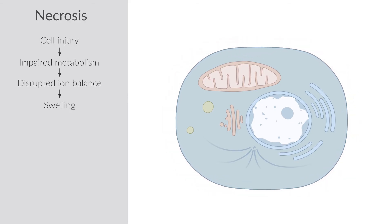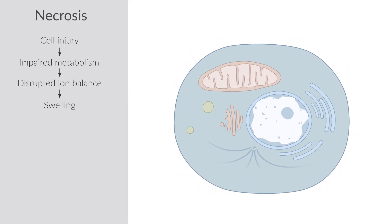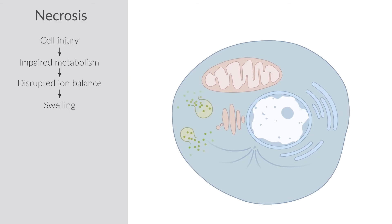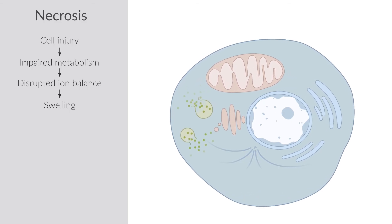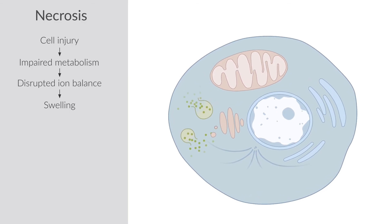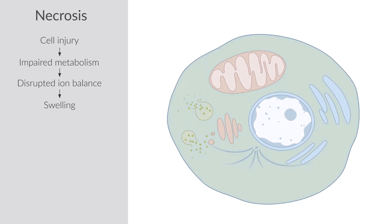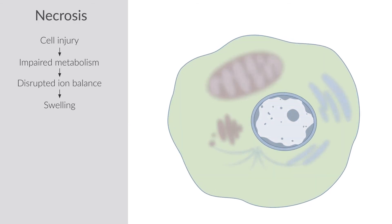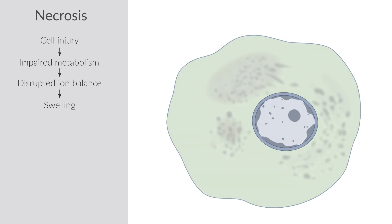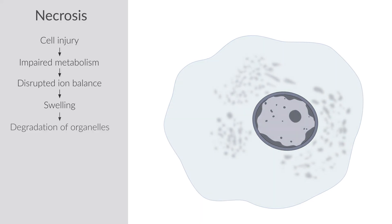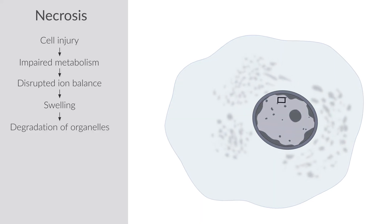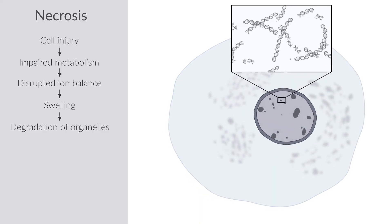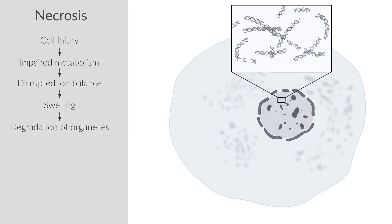Other organelles such as lysosomes also swell, leading to lysosomal membrane damage. Lysosomal enzymes leak out of the cell and into the cytoplasm. This influx of degrading enzymes subsequently breaks down other cell organelles. In the nucleus, the DNA is degraded, which is visible as chromatin clumping.